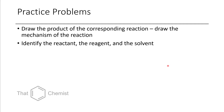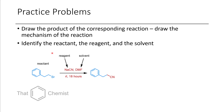Now for the next problem, we want to draw the mechanism of the reaction. We also want to identify the reactant, the reagent, and the solvent. Here in this scheme we have the reactant on the left, the reagent is present above the reaction arrow — in this case we're using sodium cyanide — and the solvent of our reaction is dimethylformamide.